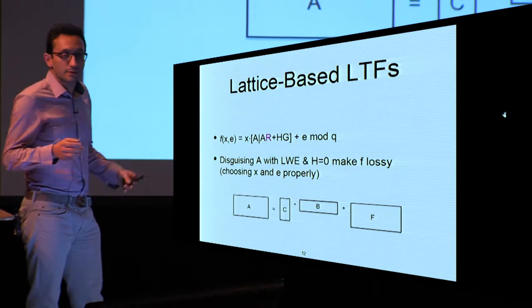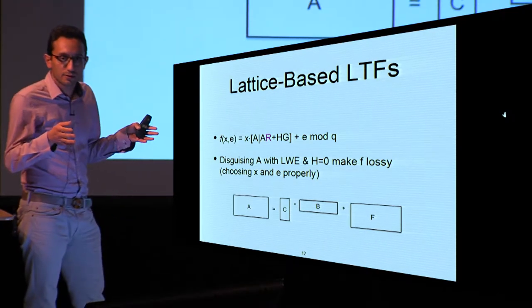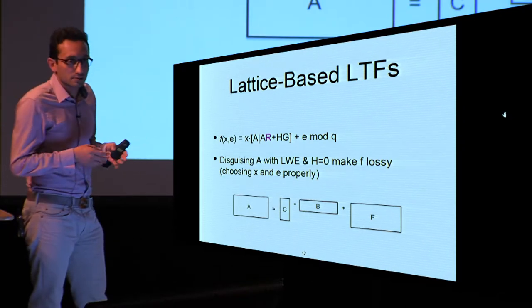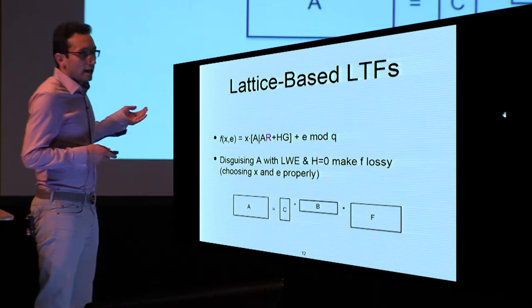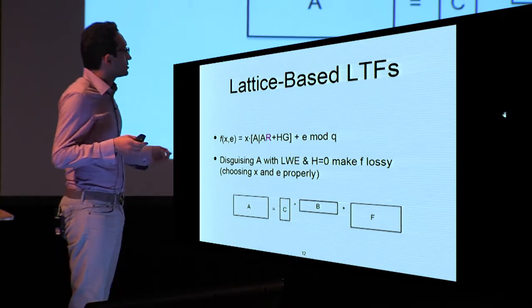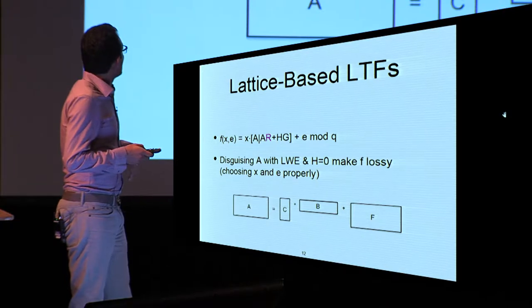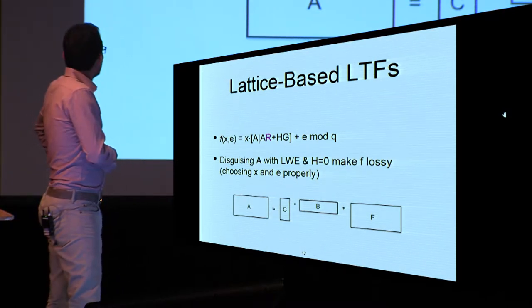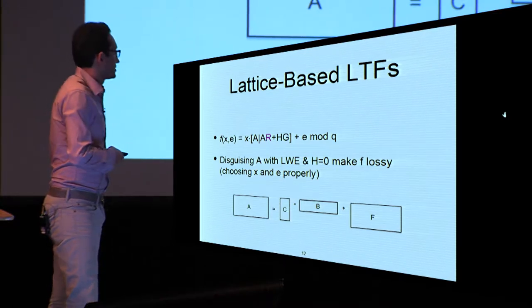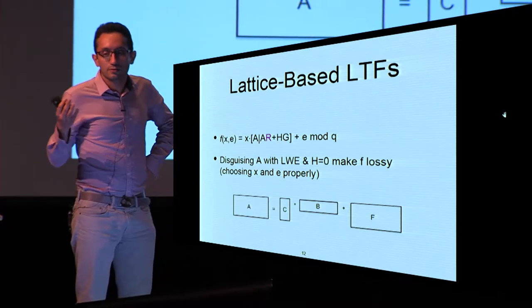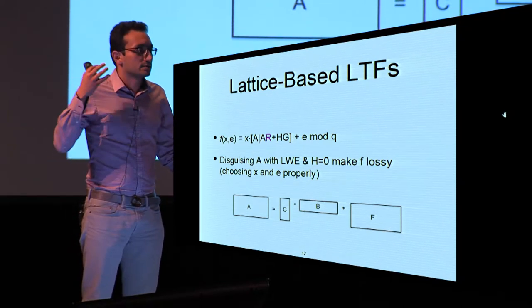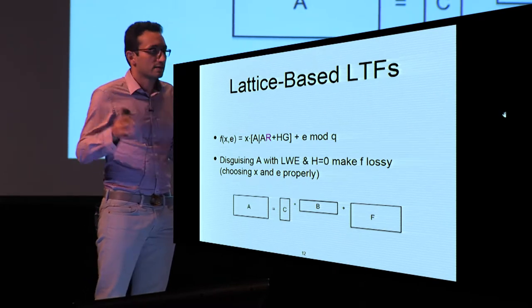Regarding the parameters in the concatenation [A | AR+HG]: HG is the typical gadget matrix. A comes from LWE, from learning with errors. If H is zero, then F is lossy. A can be replaced by CB+F, and as a special case, A can be seen as an LWE set of samples — specifically A and As+E concatenated together — which serves as A itself.